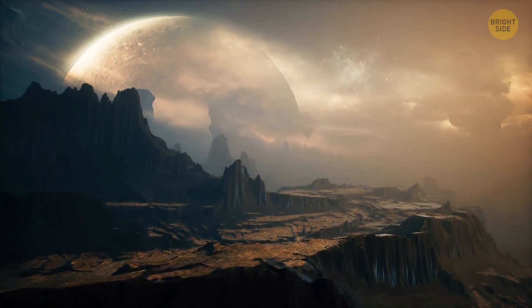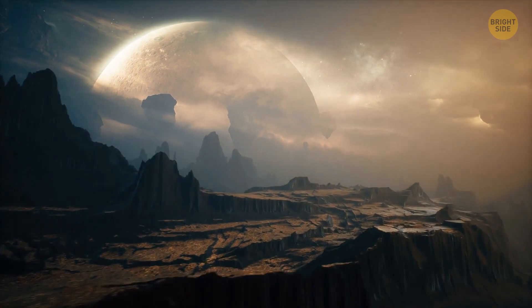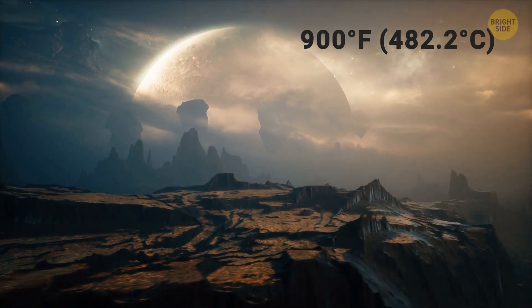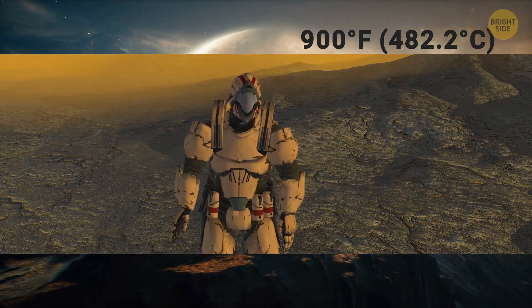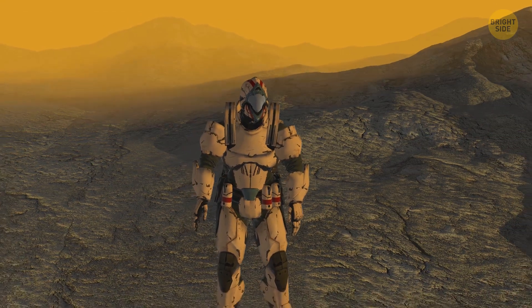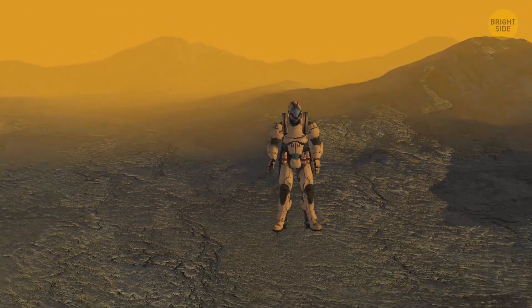To survive on Venus, you'd need super-duper insulation, because temperatures can reach a sizzling 900 degrees Fahrenheit. Plus, the weight of the atmosphere would bear down on you like being submerged deep in the ocean.